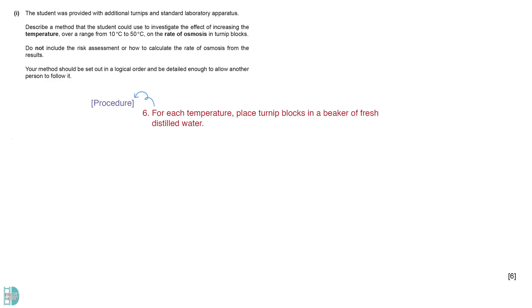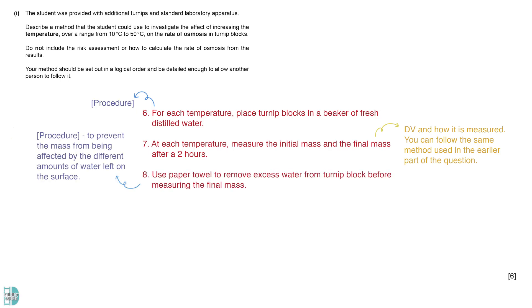We will place the specimens into beakers with distilled water at different temperatures. Describe the measurements made to obtain the dependent variable. You can follow the same method used in the earlier part of the question. A paper towel should be used to remove excess water from the turnip block before measuring the final mass. This prevents the results from being affected by the different amounts of water left on the surface of the blocks.